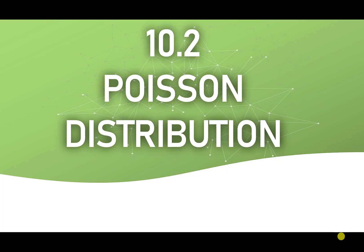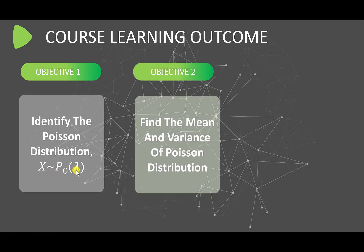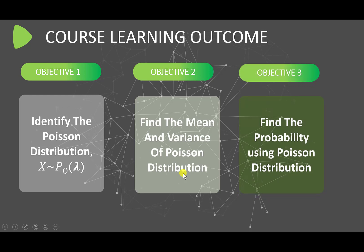We discuss 10.2 Poisson Distribution. The course learning outcomes are: Objective 1, identify the Poisson distribution, with notation X distribute Poisson lambda. Objective 2, find the mean and variance of Poisson distribution. Objective 3, how to find the probability using Poisson distribution.